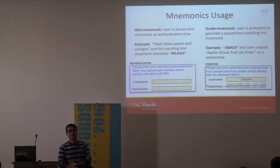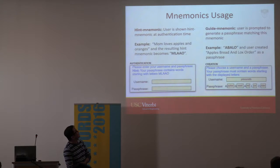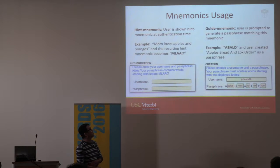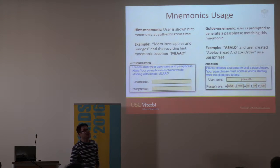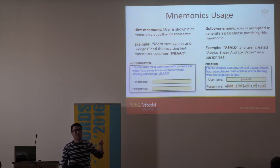I propose two different approaches. The first approach: let's say you generate a passphrase — for example, 'mom loves a friend orange' — and we take the first letter of each word in your passphrase. So M-L-A-A-O is the mnemonic hint we generate. When a user authenticates, we present M-L-A-A-O, and by looking at these first letters, the user can hopefully remember their passphrase.